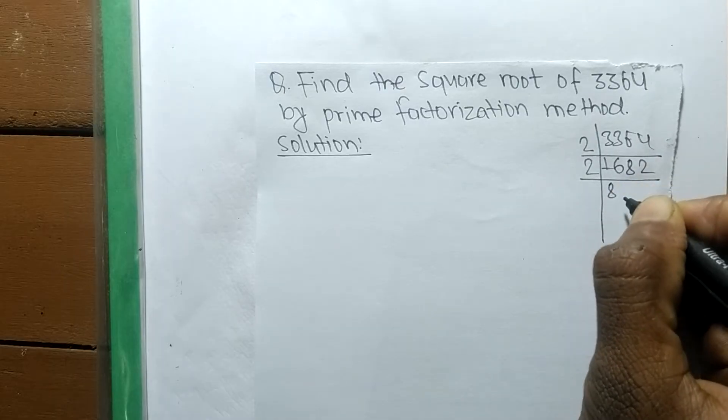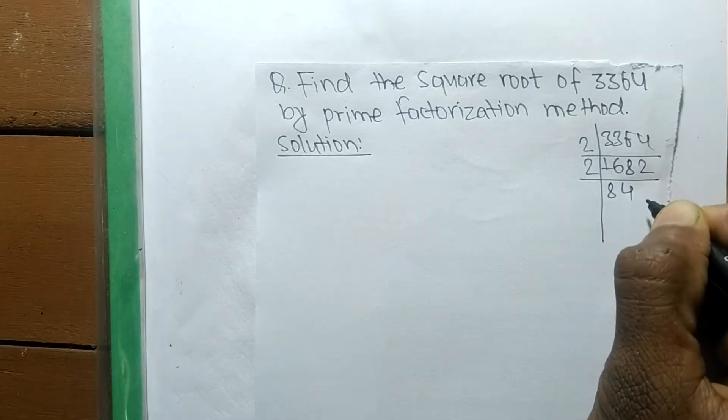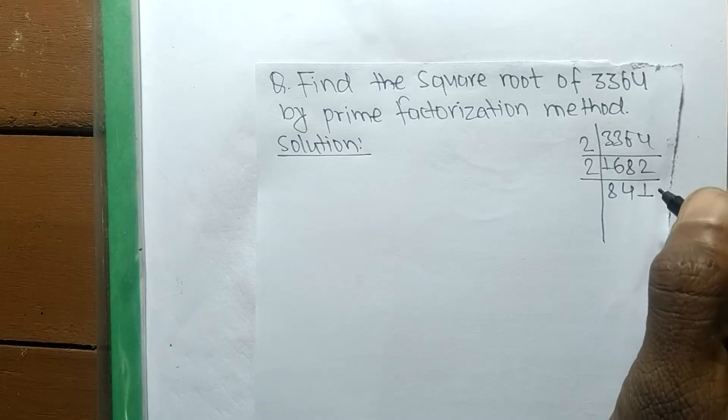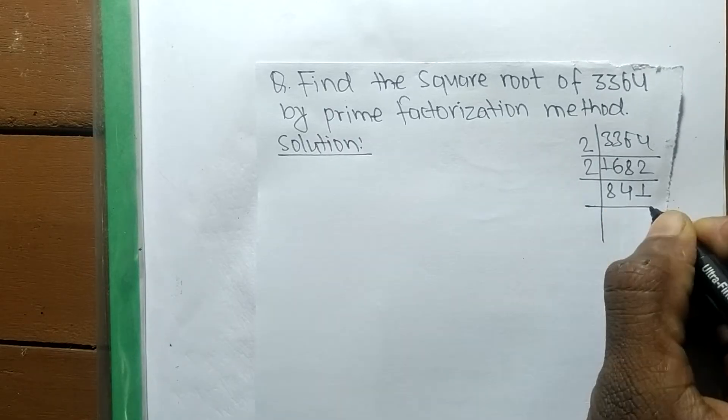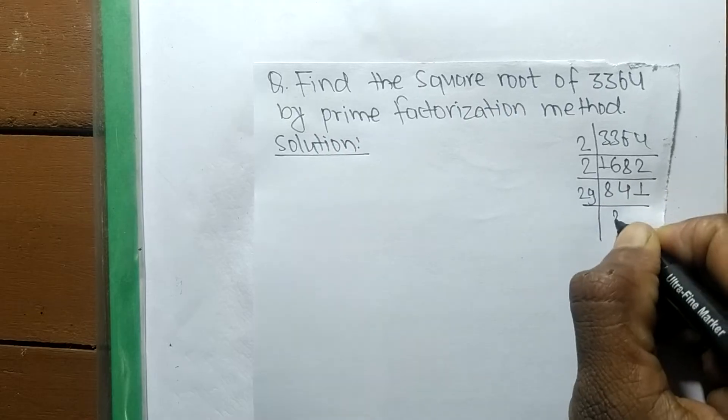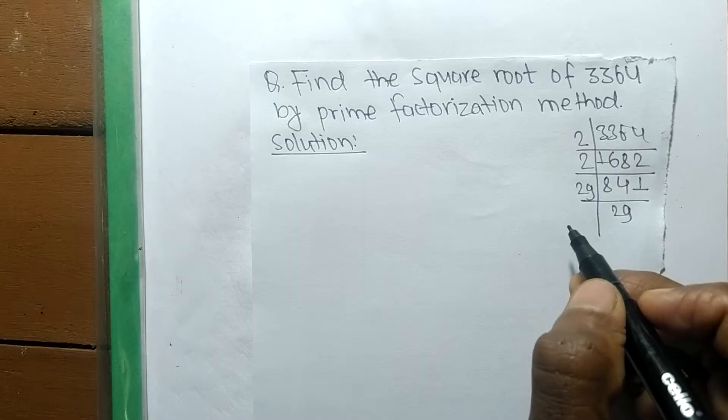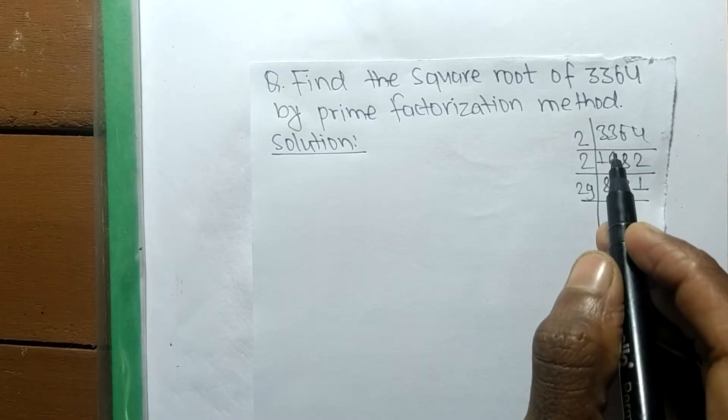2 times 8 means 16, 2 times 4 means 8, and 2 times 1 means 2. Now it is equal to 29 times 29, which means it is 841. So we have found the prime factors of 3364.